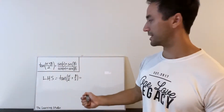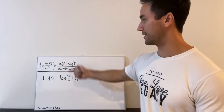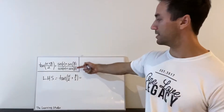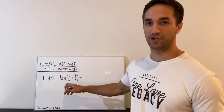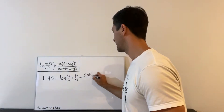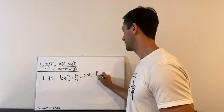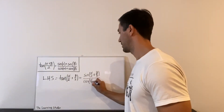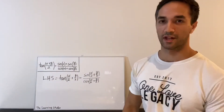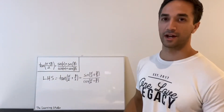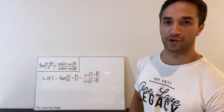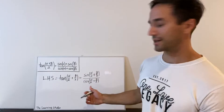The next thing to think about: on the right side I've got sines on the top and cosines on the bottom, so let's change this tan to be sine over cosine. Now this is really set up to use the addition formula — there's nothing else you can do, and we want to end up with some addition here anyway, so that seems like a sensible thing to do.